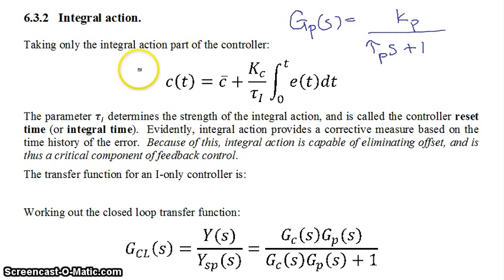So if we take only the integral action part of the controller, which looks like this, so you have kc over tau i times the integral of your error. Now this parameter tau i determines the strength of the integral action and is called the controller reset time, or sometimes called the integral time.